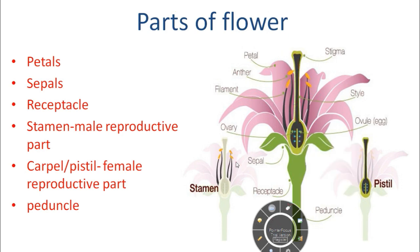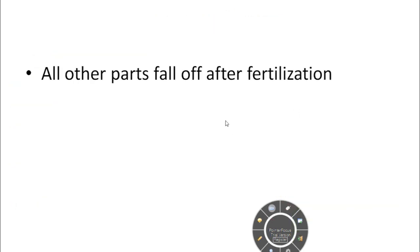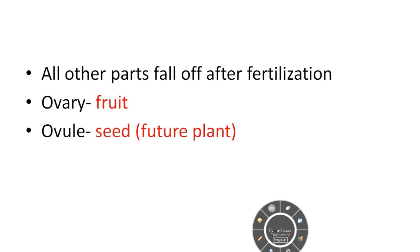Now after fertilization, all the other parts of the flower fall off, and the ovary develops into the fruit — it swells up — and the ovule develops into the seed, which is actually our future plant.